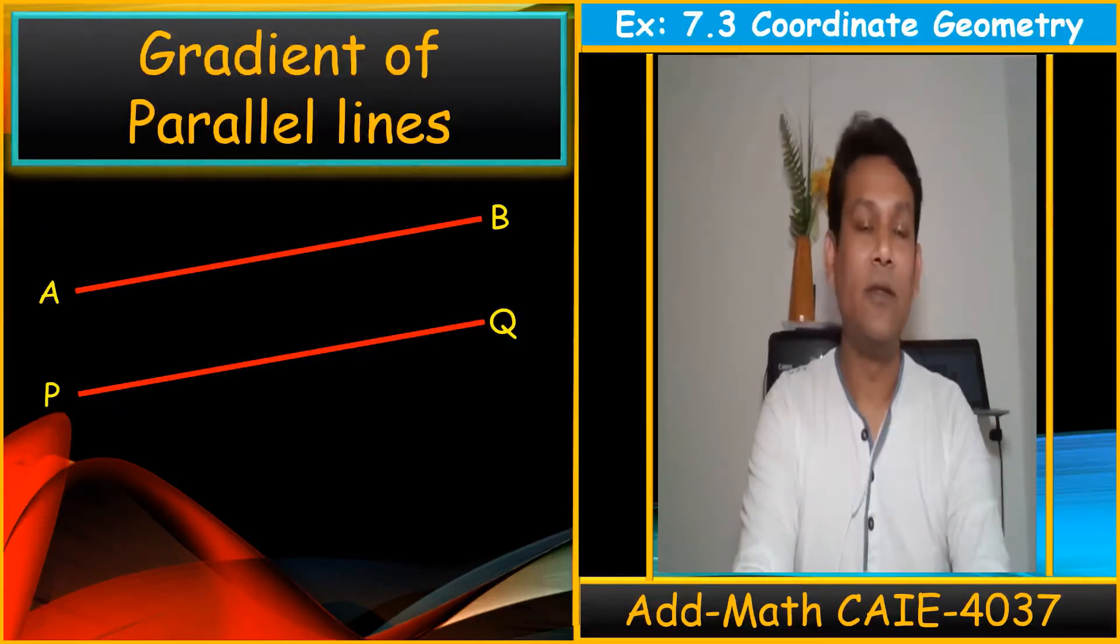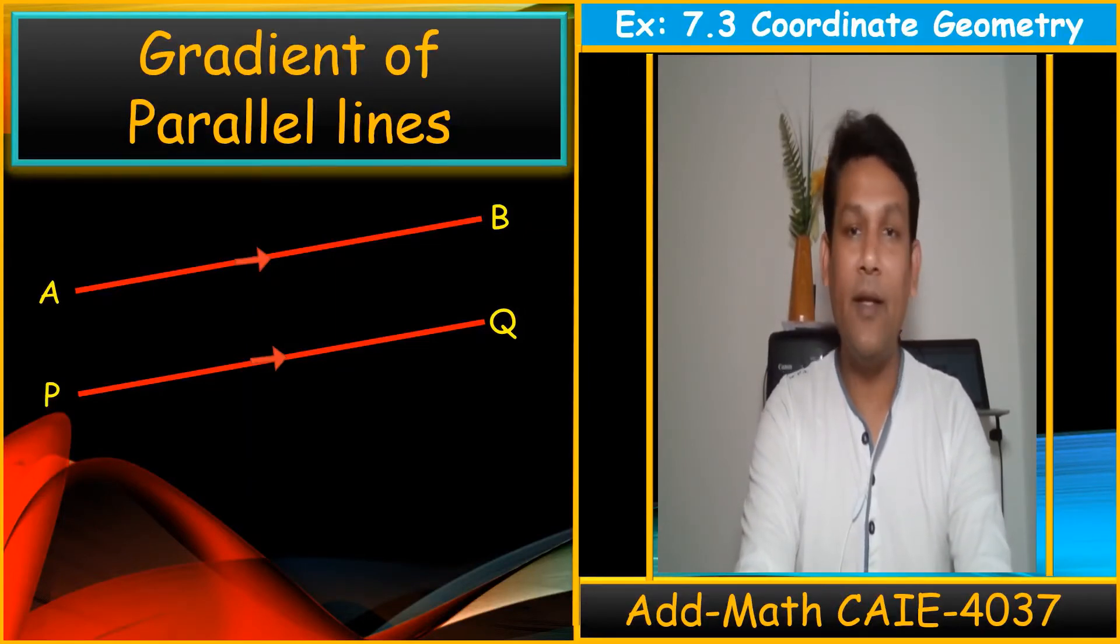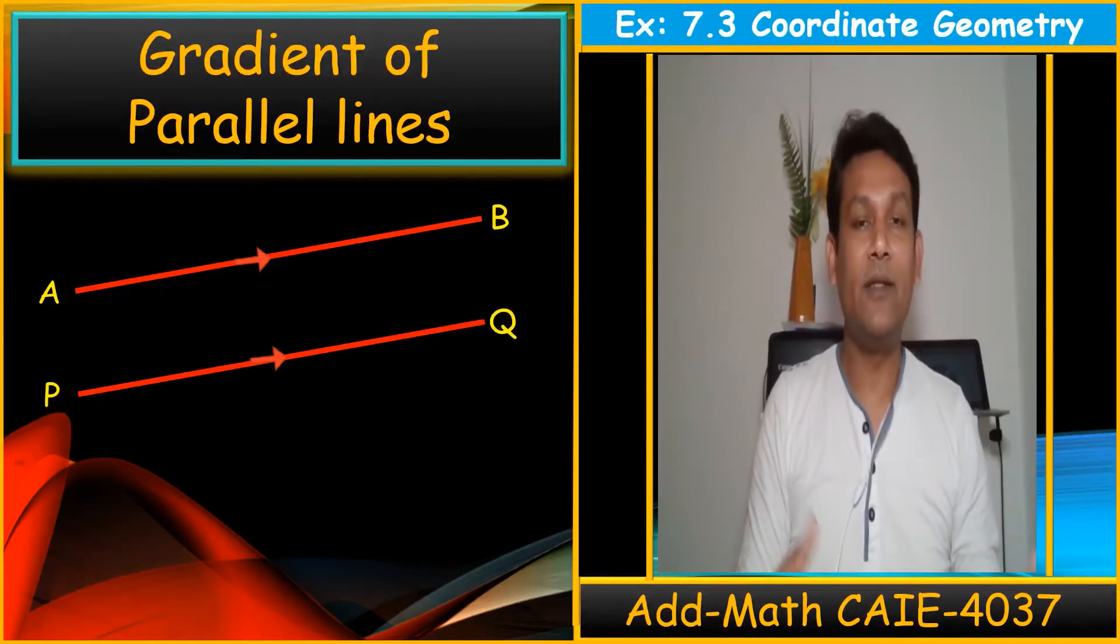Gradient of parallel lines. Do you think this line AB and PQ are parallel? They are not parallel when these two arrows are not given. In mathematics, when we have arrows with the line, it means the lines are parallel. When there are no arrows, we cannot decide or think these lines are parallel. The lines are parallel.